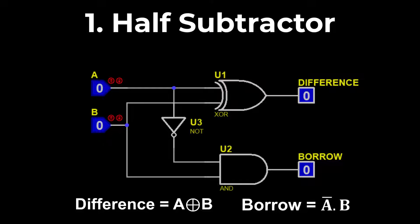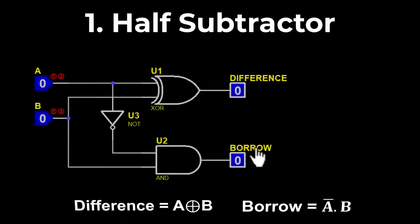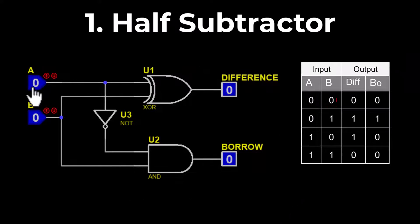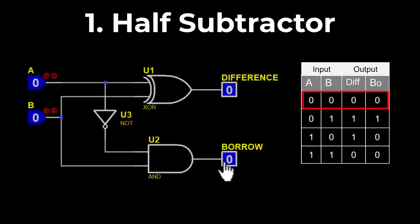Let's explain the half subtractor with the help of the truth table. As you can see, there are two inputs A and B, and two outputs: difference and borrow. Let's apply the inputs and check the output of the half subtractor.